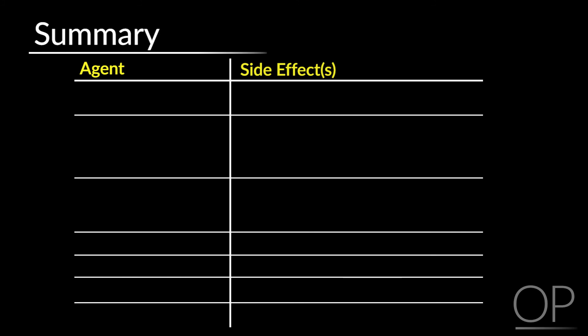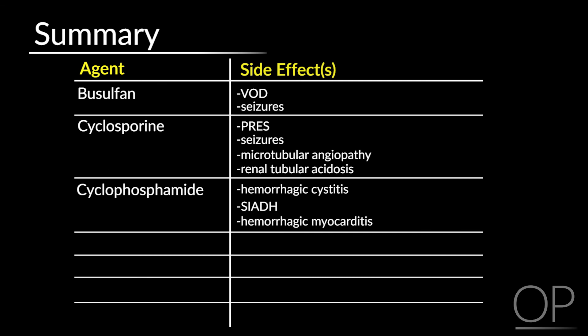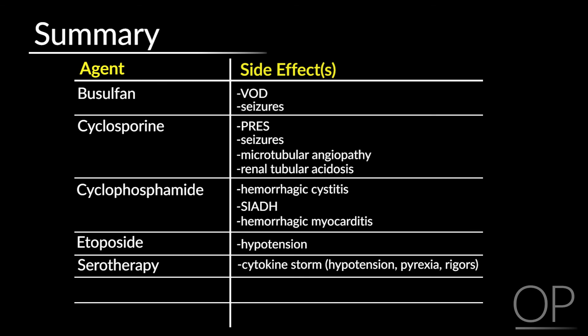In summary: with busulfan, think about veno-occlusive disease and seizures. With cyclosporine, think about PRES or posterior reversible encephalopathy syndrome, seizures, thrombomicroangiopathy or renal angiopathy, and renal tubular acidosis. With cyclophosphamide, the two main early complications are hemorrhagic cystitis and an SIADH-like syndrome, and be aware of the rare but potentially fatal complication of hemorrhagic myocarditis. Etoposide can cause hypotension. Serotherapy agents can cause a cytokine storm with hypotension, rigors, and fevers. Total body irradiation can cause immediate jaw pain. And thiotepa can cause chemical burns.